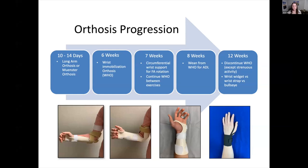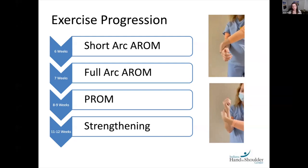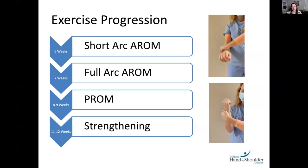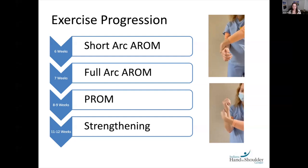Neutral positioning allows the ligaments to be taut, but forearm position may change depending on structures repaired and surgeon direction. A Muenster orthosis is another option — it allows elbow motion while limiting forearm rotation. The patient wears one of these orthoses at all times until exercises are initiated at four to six weeks, then transitions from long arm orthosis to a wrist immobilization orthosis worn until 12 weeks post-op, progressively weaning to a wrist strap. Short arc active range of motion exercises are begun four to six weeks after surgery, gradually introduced to identify potential sources of pain, performed in a pain-free arc.